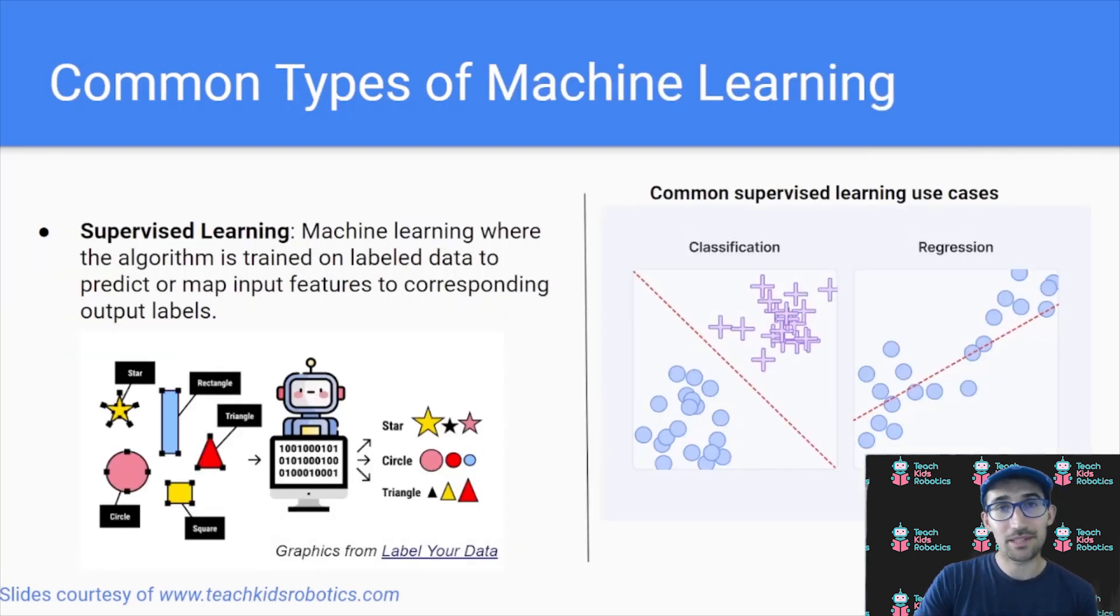So, what are common types of machine learning? The first common type of machine learning is known as supervised learning. It refers to machine learning where the algorithm is trained on labeled data to predict or map input features to corresponding output labels. And you can see in this example, if we were trying to understand what a shape was and classify what a given shape is based on the input, we can do that using a supervised learning model.